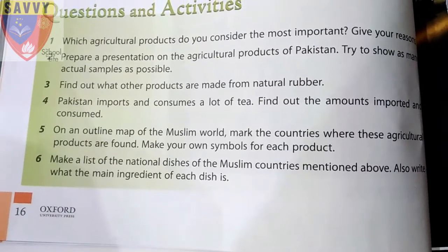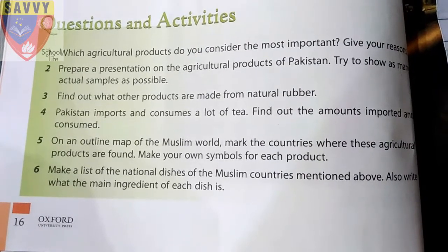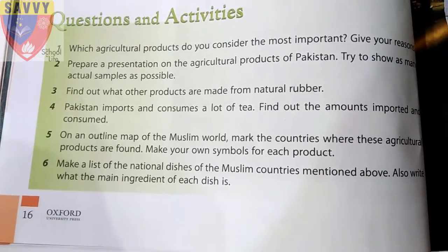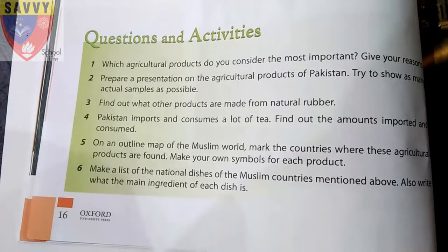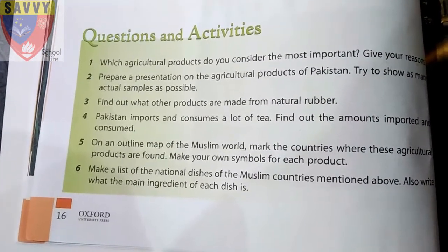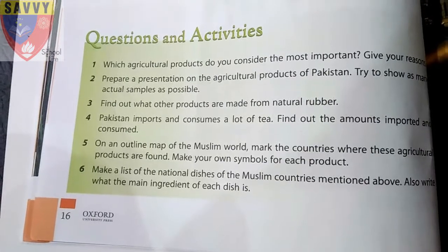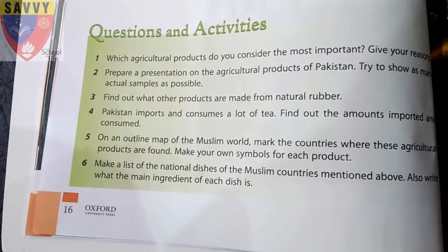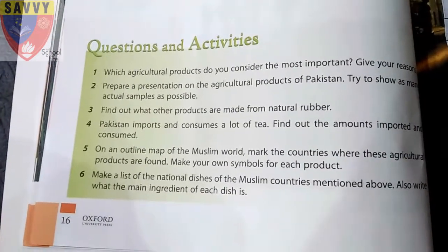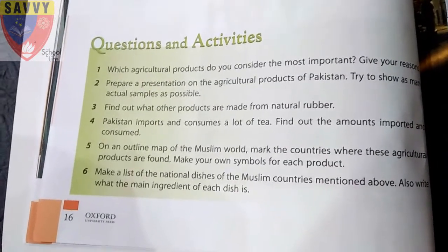Question 5: on an outline map of the Muslim world, mark the countries where these agricultural products are found and make your own symbols for each product. Get a map from the stationery shop, mark where agricultural products are found, create a column, write the name of the Muslim country and its agricultural product, use symbols, do colouring, and mention everything on the map.